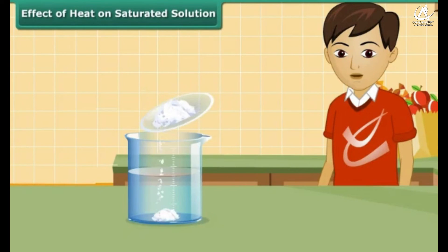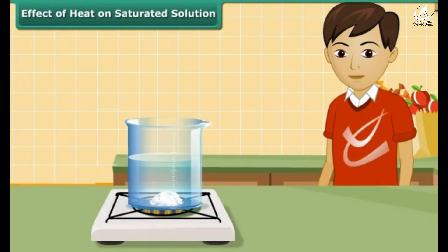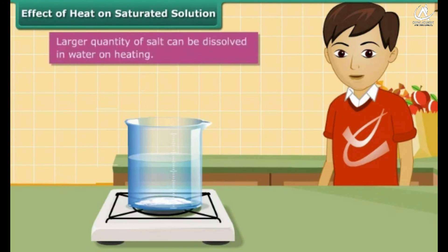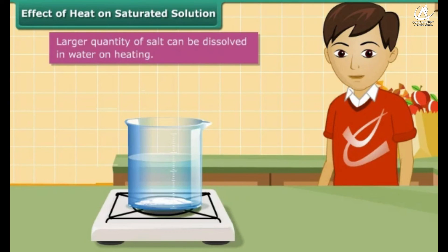Add a small quantity of salt to a saturated solution and heat it. What happens to the undissolved salt at the bottom of the beaker? Yes, it starts dissolving in the solution. Let this hot solution cool. Does the salt reappear to settle at the bottom of the beaker again? Yes, it does. Students, this activity shows that you can dissolve a large quantity of salt in water by heating.